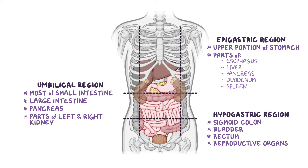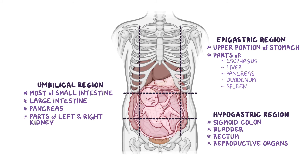And for a quick break — can you think of a time the uterus might be in another region? That's right. By the end of pregnancy, the uterus can extend into all nine regions of the abdomen.